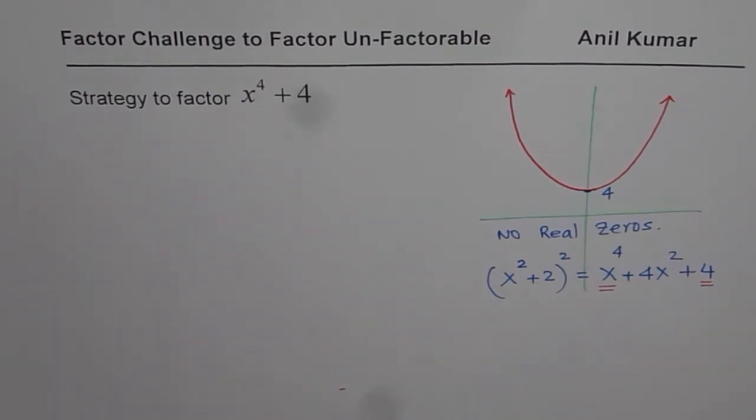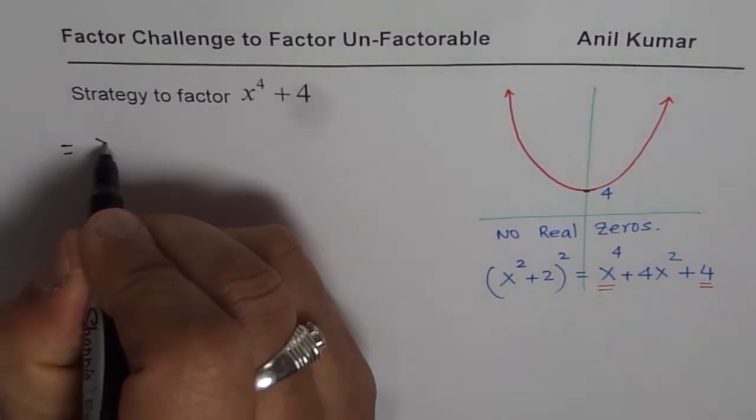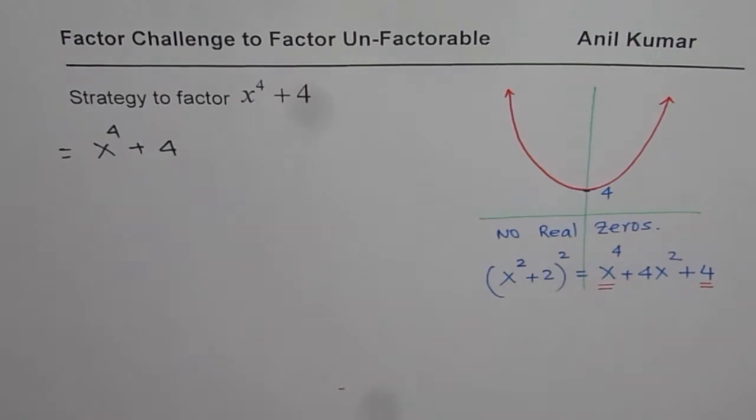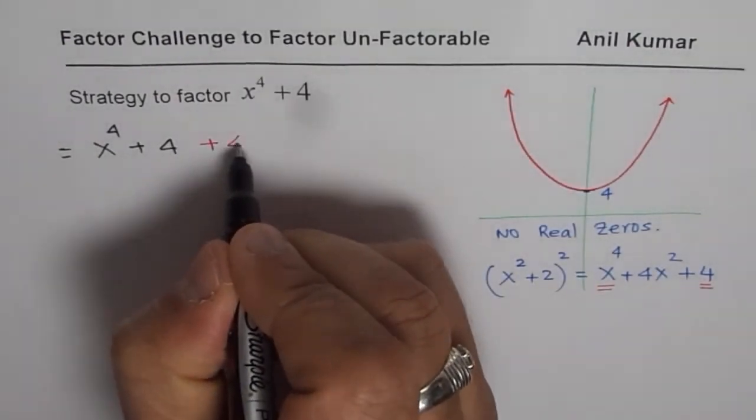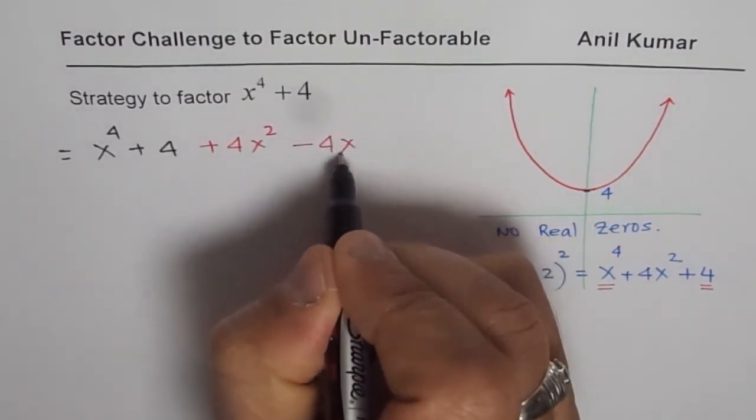So what we can really do, we can write the expression as equal to x to the power of 4 plus 4 and we can add and subtract what is missing, which is 4x square. So we will add and subtract 4x square.